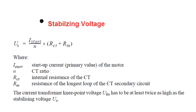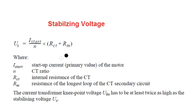To calculate the stabilizing resistance connected in series with the relay, we first calculate the stabilizing voltage Us, given by the formula: Us = (Istart / n) × (RCT + Rm), where Istart is the starting current in primary value, n is the CT ratio, RCT is the CT internal resistance in ohms, and Rm is the resistance of the longest loop of the CT secondary circuit.